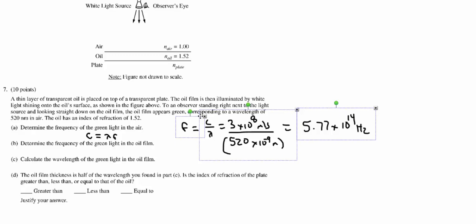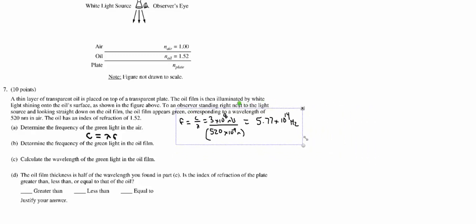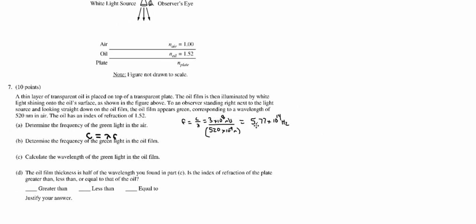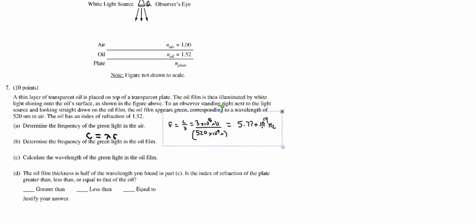Now for part B we want to know the frequency of the green light after it enters into the oil. This was a trap or trick question. You've got to remember frequency for a given already created light source will never change. So even though it enters into oil the frequency remains constant. It's still going to be 5.77 times 10 to the 14 hertz. Its wavelength and its speed will likely change as long as the index is different, and it is. The frequency will never change.